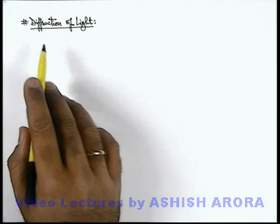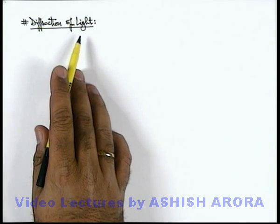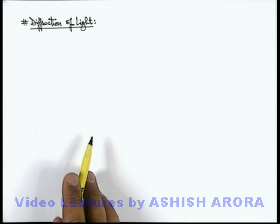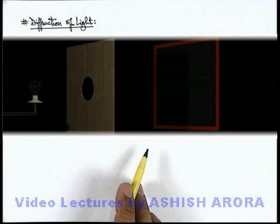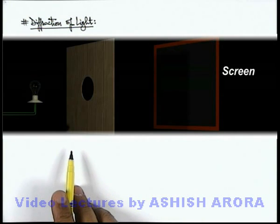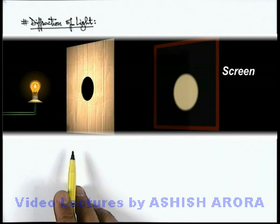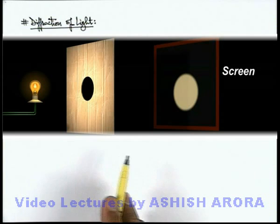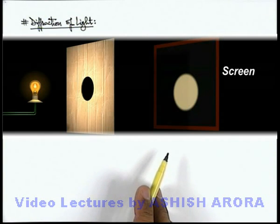Let's now discuss the topic of diffraction of light. To understand diffraction of light, let's look at a realistic situation. Here you can see a cardboard in which there is a hole, and on the other side a screen is placed. On the left side of this cardboard a point source of light is glowing, and due to the circular hole in the cardboard, a circular patch of light is obtained on the screen.